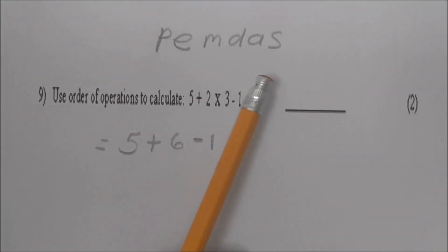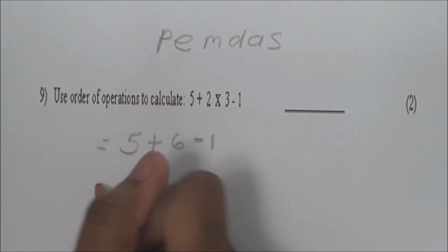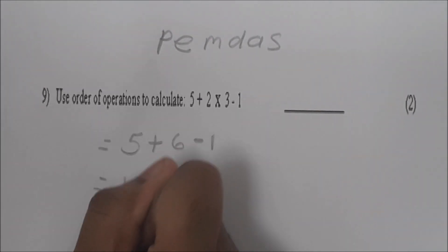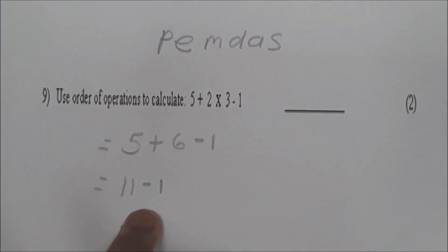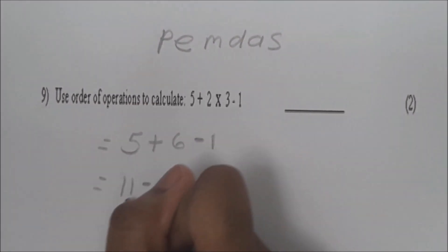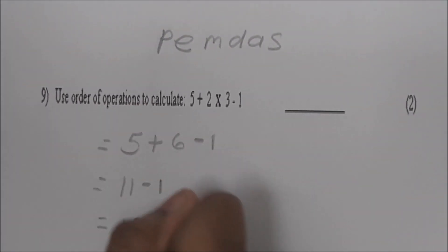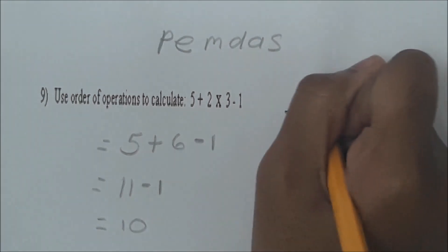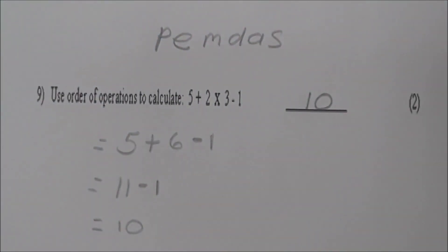Next, I'm going to add 5 plus 6, which is 11 minus 1. Subtract is the last operation, so 11 minus 1 is equal to 10. Excellent job, Priyana.